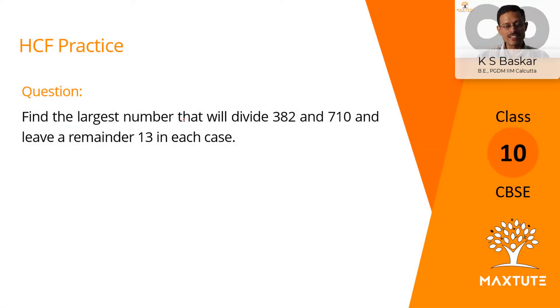In this question, we need to find the largest number that will divide 382 and 710 and leave a remainder of 13 in each case. When this number divides 382 and 710, we get a remainder of 13. Let's get started.